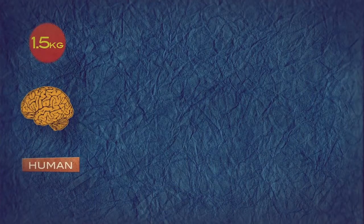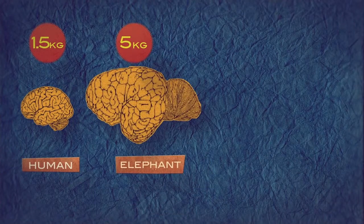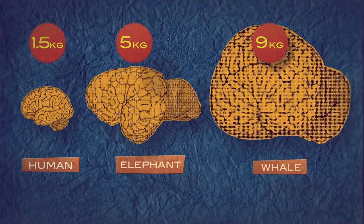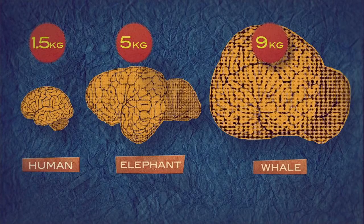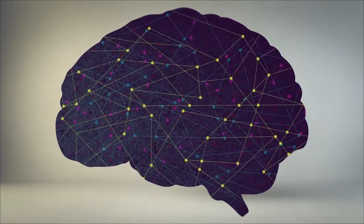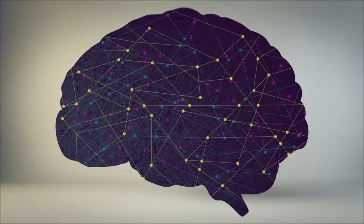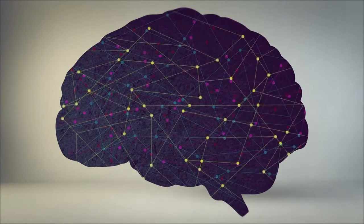Human brains weigh 1.5 kilograms, elephant brains 5 kilograms, and whale brains 9 kilograms. Yet, on a per-weight basis, humans pack in more neurons than any other species. This dense packing is what makes us so smart.